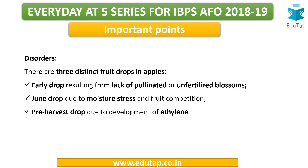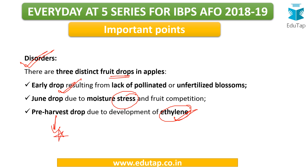In apples there are three distinct fruit drops: early drop due to lack of pollination, June drop due to moisture stress, and pre-harvest drop due to development of ethylene. Remember: the secretion or release of ethylene leads to fruit ripening. If there is excessive ethylene development in the plant, it causes a pre-harvest drop — the fruit drops from the trees before the intended harvesting period.